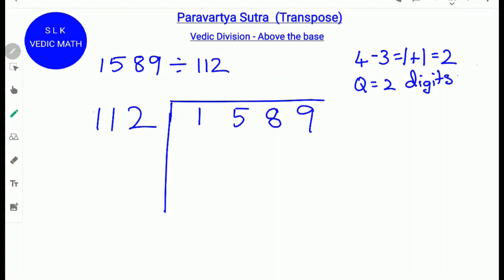Cross out the first digit 1 and write the other two digits with a negative sign: minus 1 and minus 2.